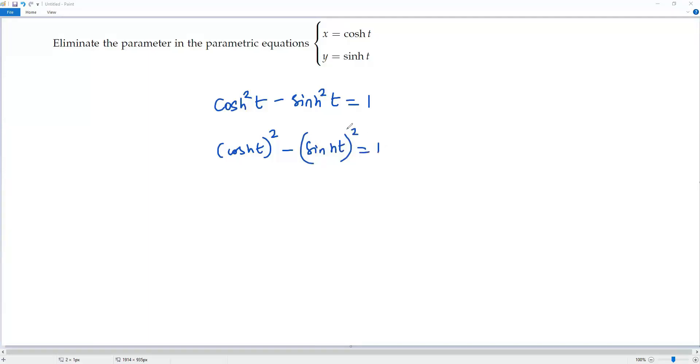So from the given parametric equations we know that cosine ht equals x. Here you can replace cosine ht by x, then you'll be getting x square, and sine ht can be replaced by y. So we get x square minus y square equals 1.